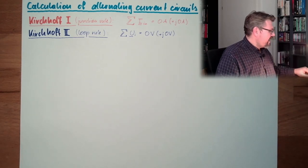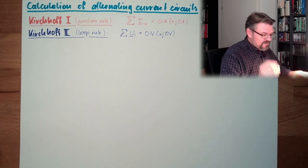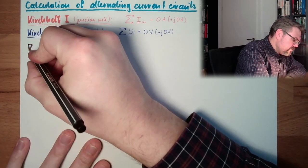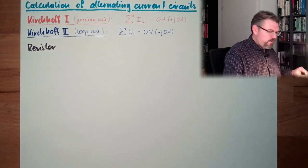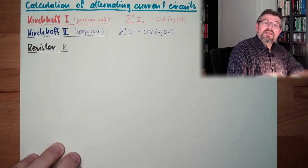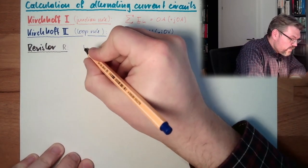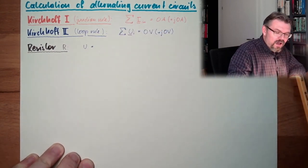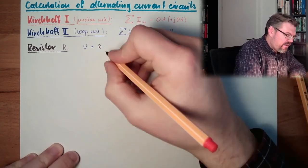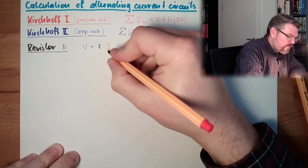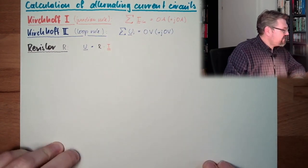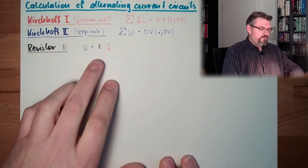Now let's see what is happening with our Ohm's law. Let's have a look at a resistor. So we have an R. At the resistor we said there is Ohm's law. So it was U equals R times I. That's it.